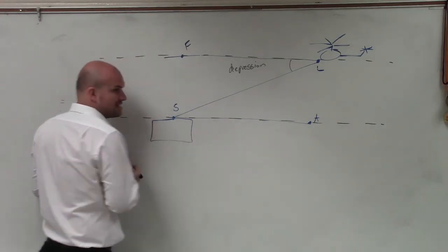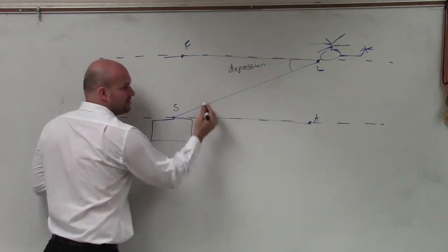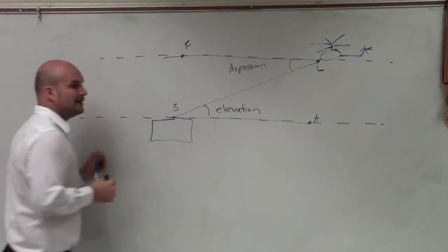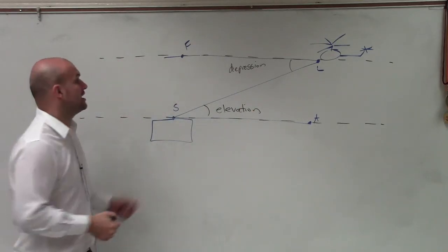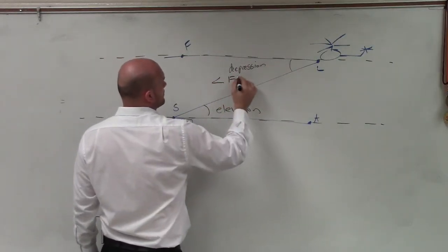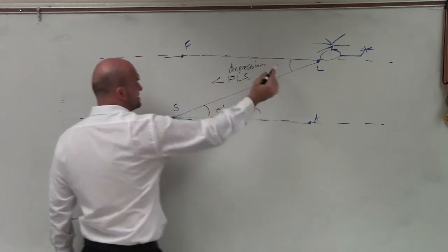Then you can see there's this horizontal, and from this horizontal we have an angle that's going up, which we call our angle of elevation. Now we can also name these by using our angles. So this angle would be F, L, S. This angle is angle A, S, L.